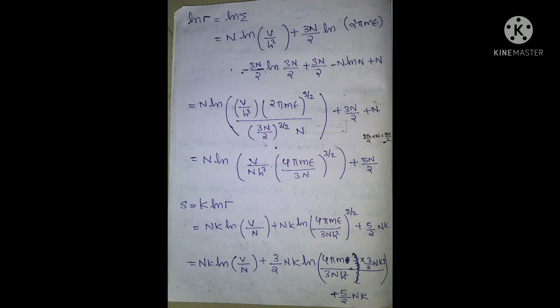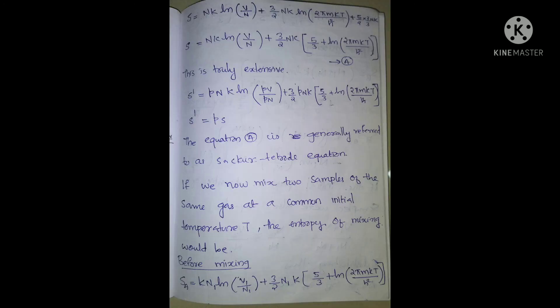Entropy equals k log sigma. With gamma equal to this expression, we have the equation with first and second terms multiplied by k. The final entropy equation is: S = nk log(V/n) plus (3/2)nk times [log(2πmkT/h²)] plus (5/2)nk. This is the Sackur-Tetrode equation, and it is an extensive equation.